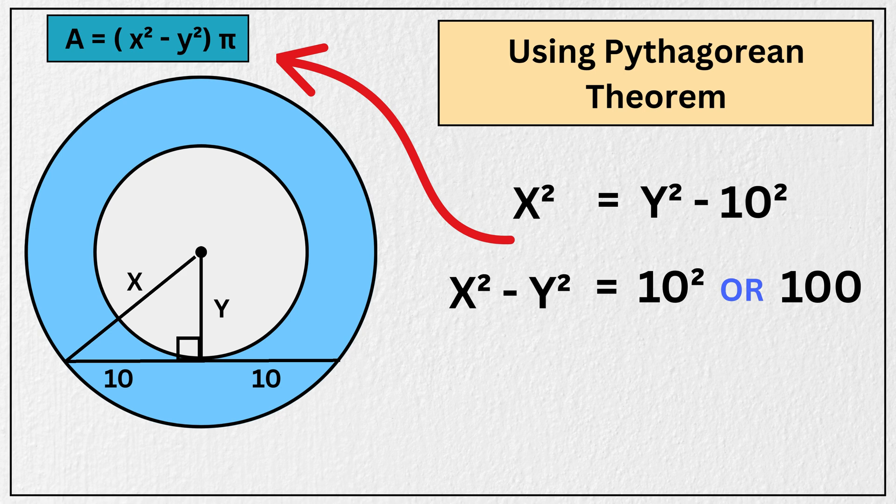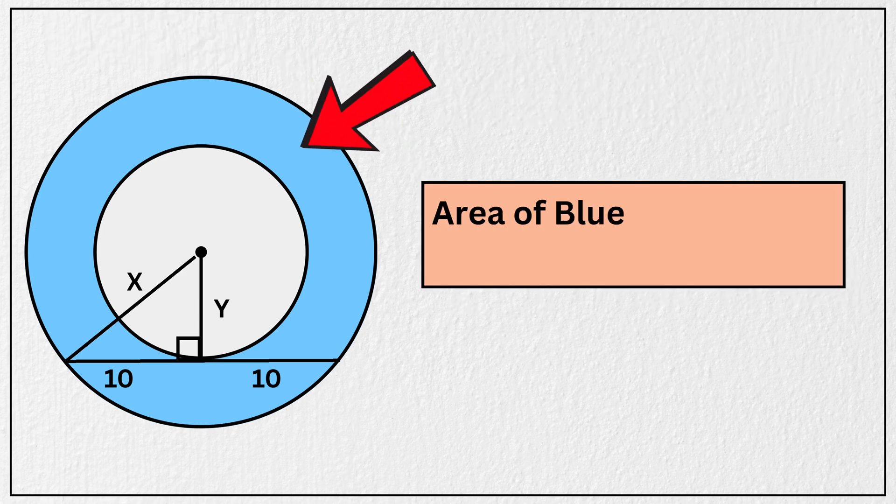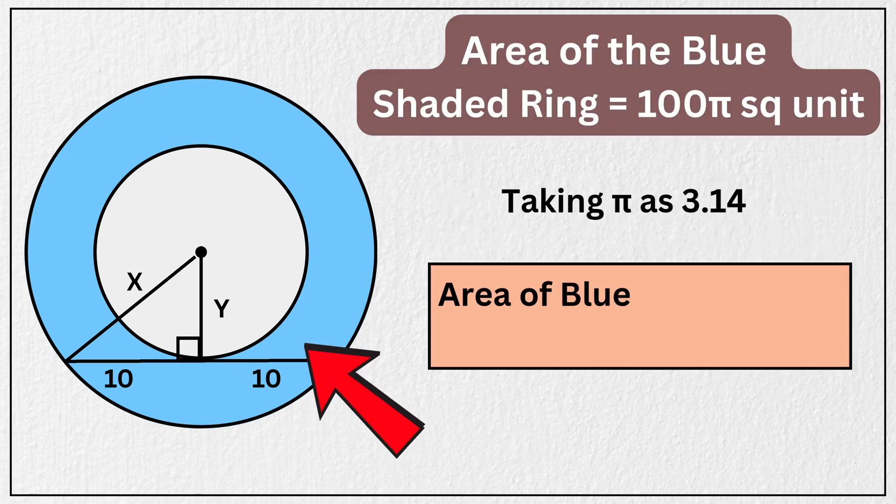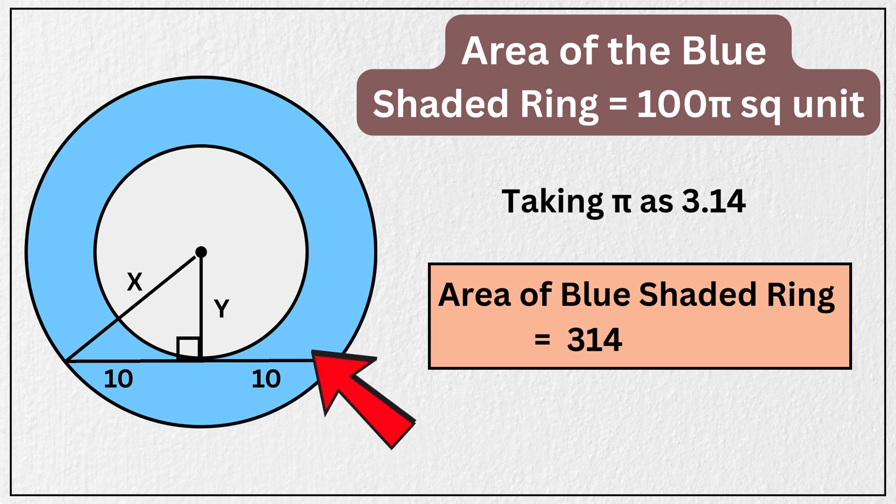Now substitute this into the formula, area of blue shaded ring is equal to 100 pi. And if we take the value of pi as 3.14, we get the area of the blue shaded ring to be approximately 314 square units. And that's our answer.